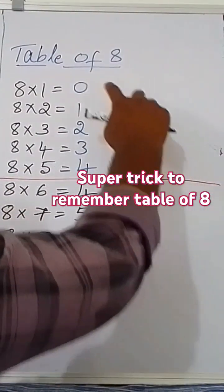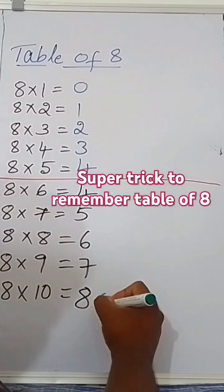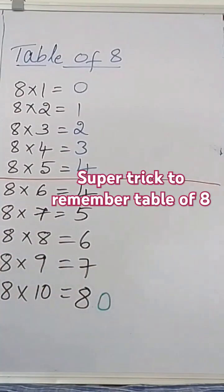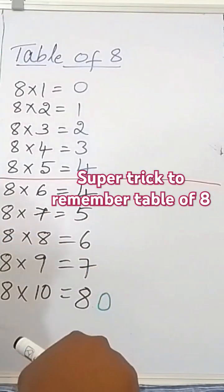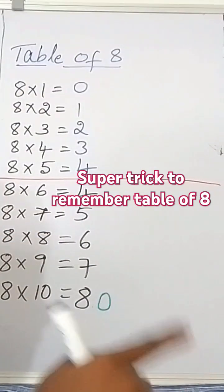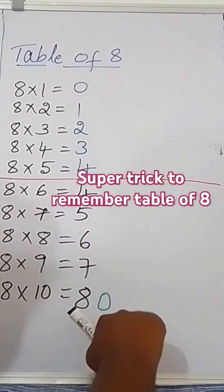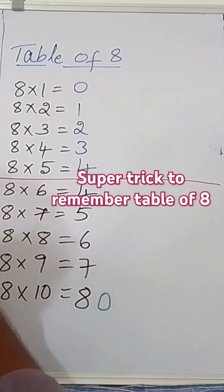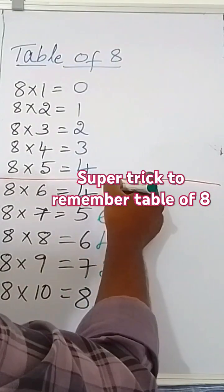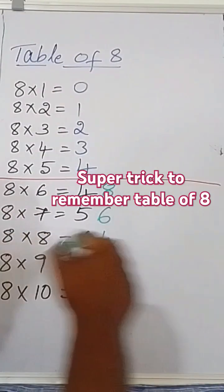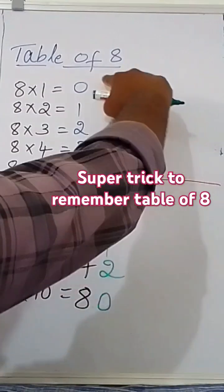Coming from top to bottom we started from 0; when going from bottom to top, you start from 0 again. Now write the even numbers greater than 0 — even numbers are completely divisible by 2 — so the even numbers greater than 0 are: 2, 4, 6, 8. Repeat these: 0, 2, 4, 6, 8 in the first half.